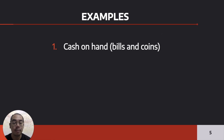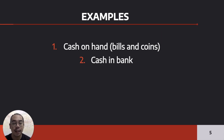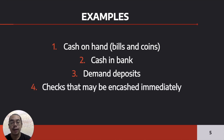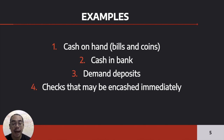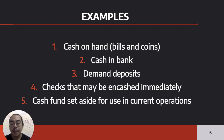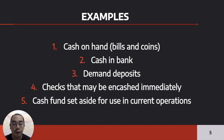Some examples of cash are: number one, cash on hand — these are your bills and coins. We also have cash in bank — deposits in the bank. We have demand deposits, meaning you deposited in the bank and you can demand it for use. We also have checks that may be encashed immediately. Cash fund set aside for use in current operations — take note of the operative term, current operations. For example, a fund set aside for salaries and wages is cash. But a sinking fund is not considered cash because it is not for current operations.